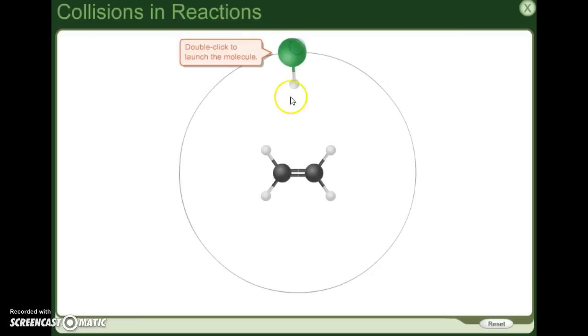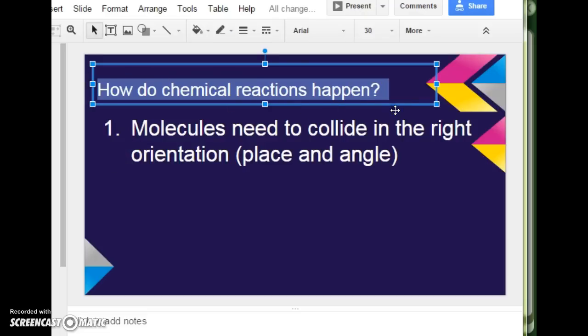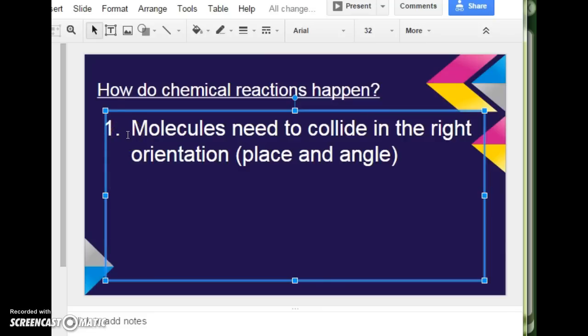But in this case, it needs to react at the point of the double bonds. So that the double bonds split, become a single bond. And this carbon shares with that hydrogen. This carbon shares with the chlorine. So, in your notes, make sure you wrote down how do chemical reactions happen. Number one, molecules need to collide in the right orientation. So, the right place, the right angle, the right alignment.